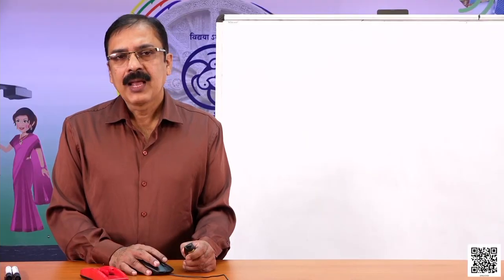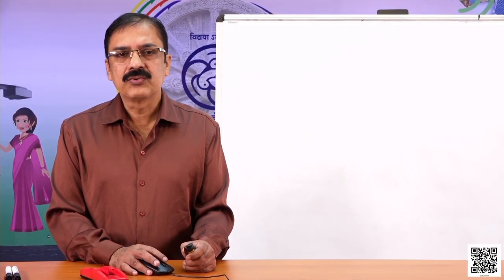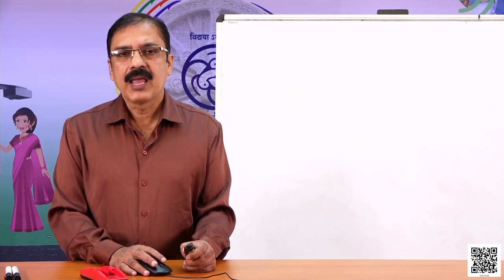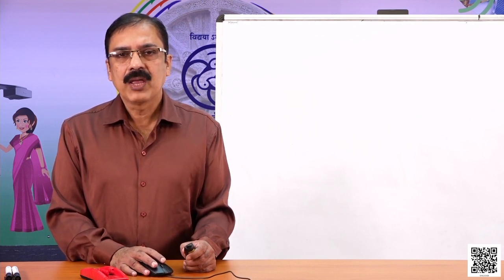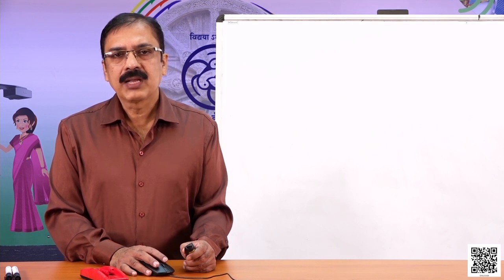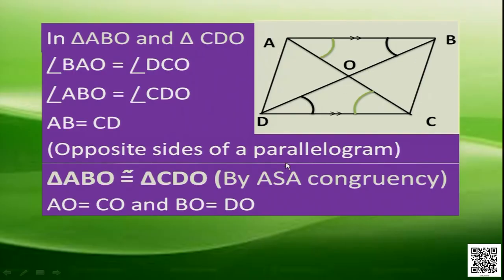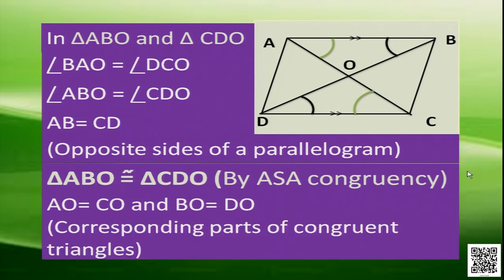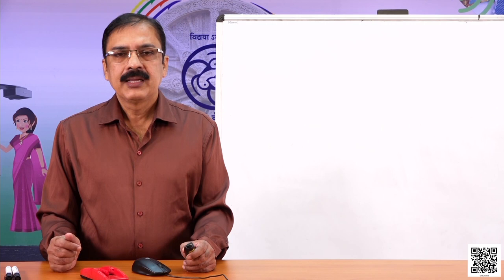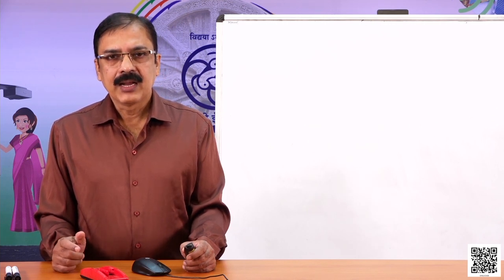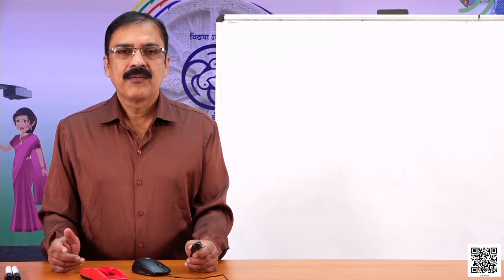We can have the corresponding parts of these two congruent triangles. These give us AO is equal to CO, and similarly BO is equal to DO. So we proved that in a parallelogram, the diagonals bisect each other — these are the corresponding parts of congruent triangles.